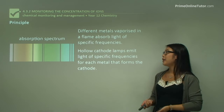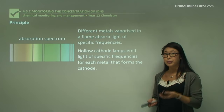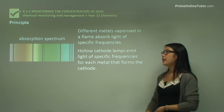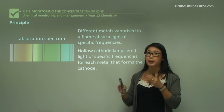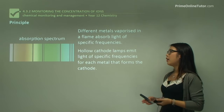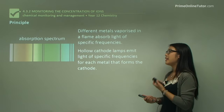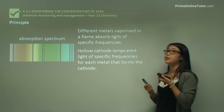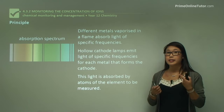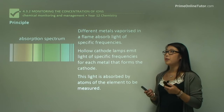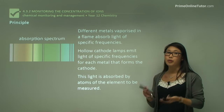Hollow cathode lamps emit light of specific frequencies, and it's specific for the metal we're looking for. If we're looking at one metal, it will have black bands at certain points, and another metal will have black bars at different spots. The hollow cathode lamp is specific for the metal ion we're looking for and is also made of that metal. Light is absorbed by atoms in the sample, and we can determine from the absorption spectrum what ions are present.